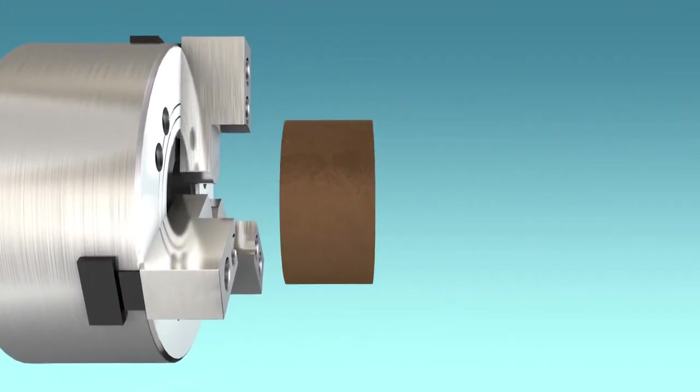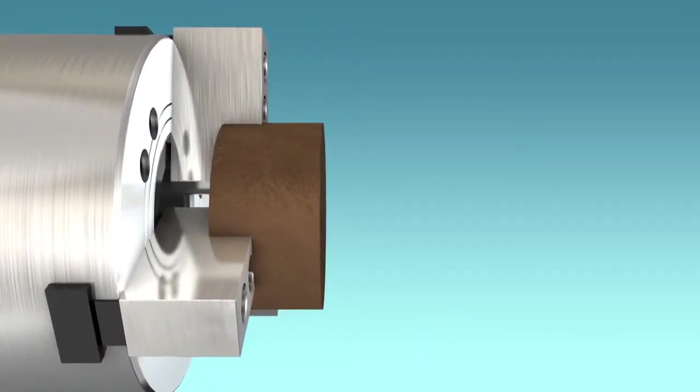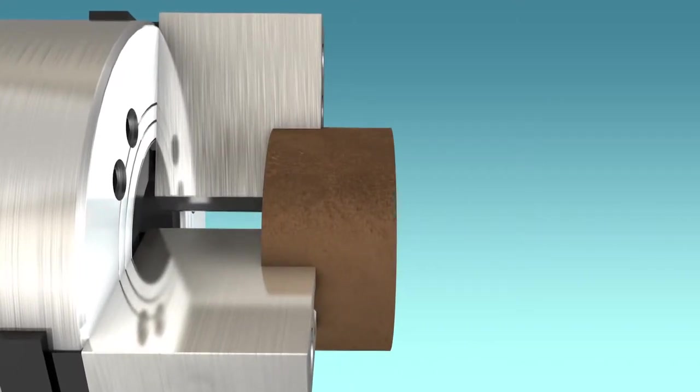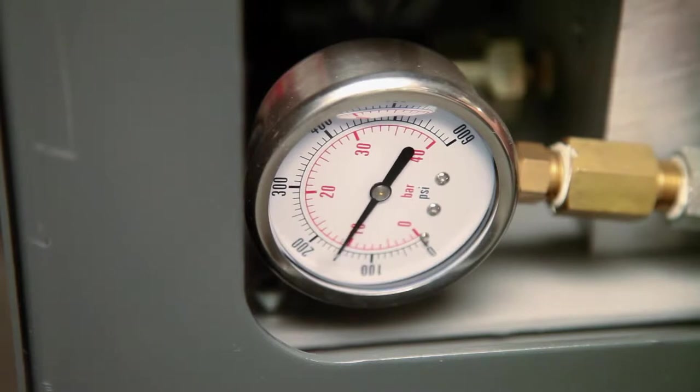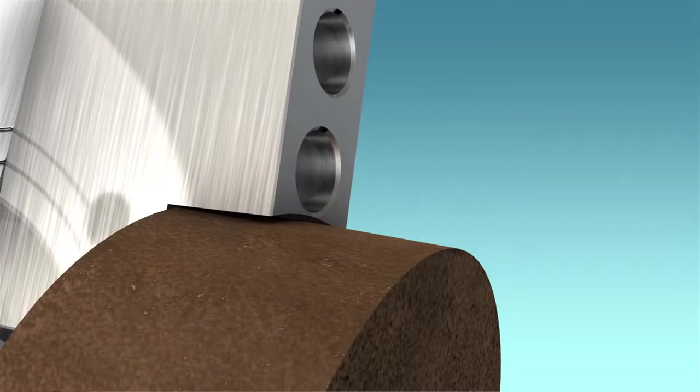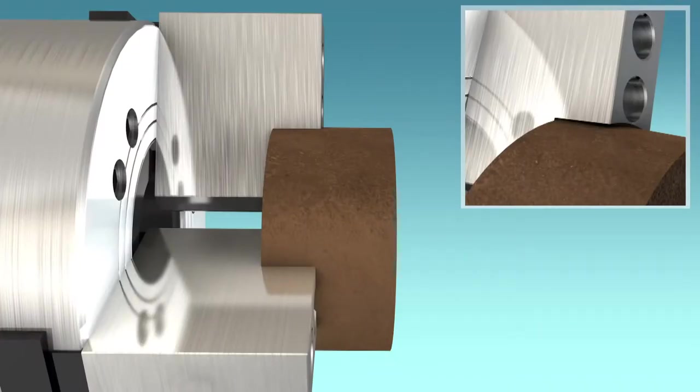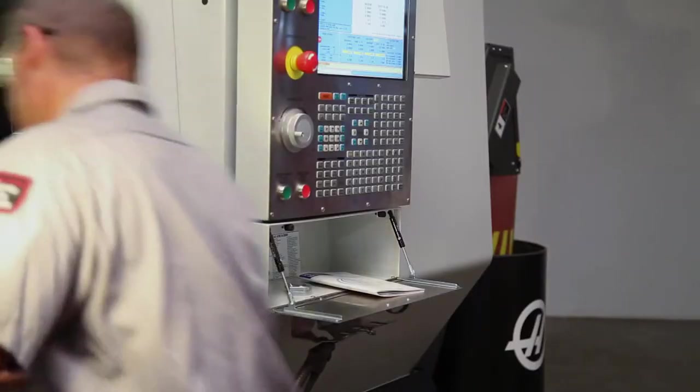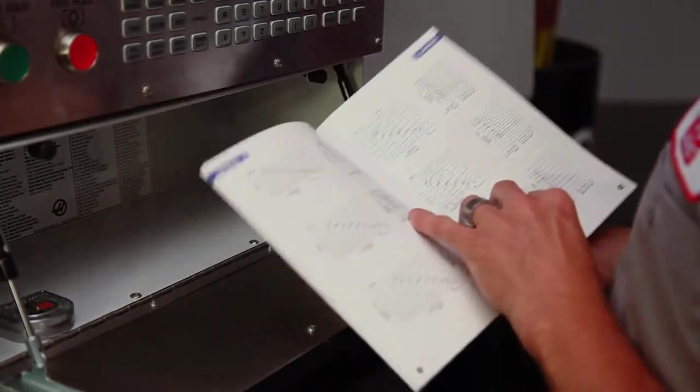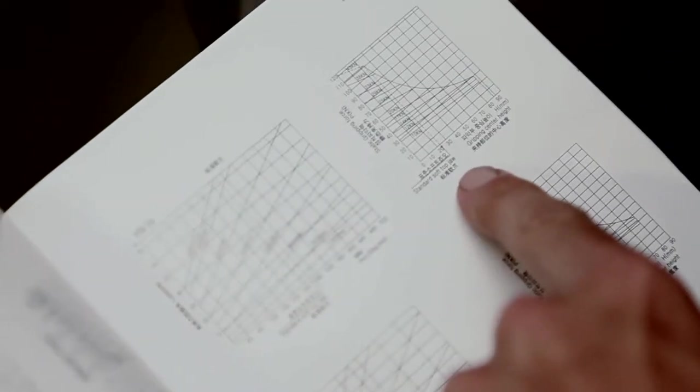As the jaw height increases and the part moves away from the chuck face, the clamping force on the part naturally decreases. If the clamping pressure is set too high in an attempt to increase the clamping force, the soft jaws will be distorted, actually decreasing grip force. And the additional leverage from the longer jaws can overload and damage the chuck. Instead, refer to your chuck documentation to find a balance between grip center height and clamping force.